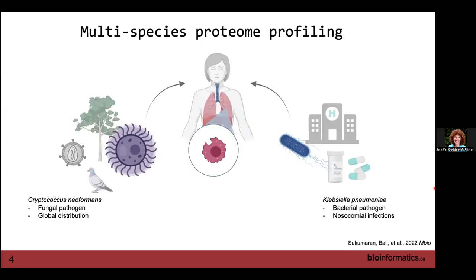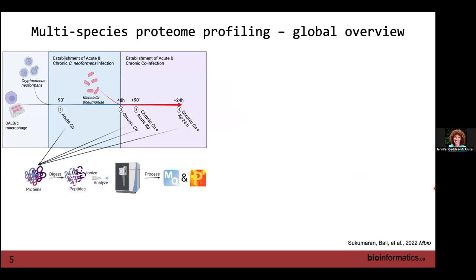Some examples from our work include looking at macrophage upon infection with a fungus and also with a bacteria. We selected these two because they have similar modes of action — both through the lungs — and similar virulence factors. However, the host will respond very differently to a fungal pathogen versus a bacterial pathogen, and we want to study what that difference is.